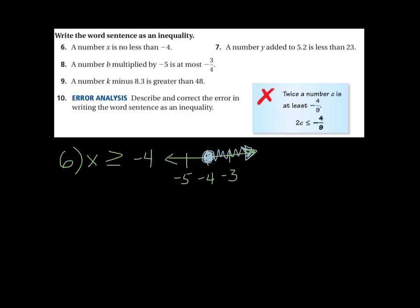All right, next one. Number 7. A number y added to 5.2, so let's put that in there, is less than 23. So that's a good one. That's nice and straightforward. I'm not going to make it into a graph for that one quite yet.